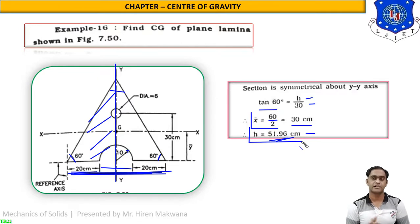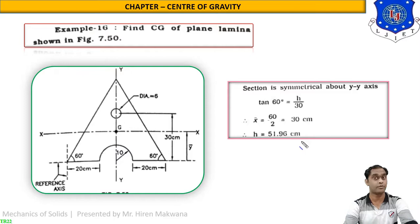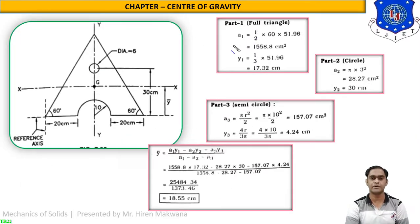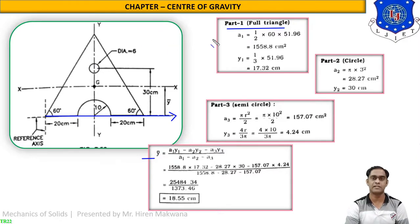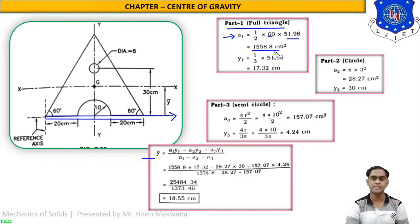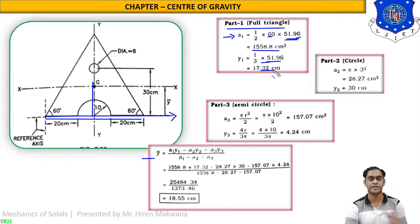Now for the y-bar calculation: taking part 1 as the full triangle, area A1 = ½ × base × height = ½ × 60 × 51.96 = 1558.8 cm². The CG of the triangle is at a distance of h/3 from the bottom, so y1 = 51.96/3 = 17.32 cm.